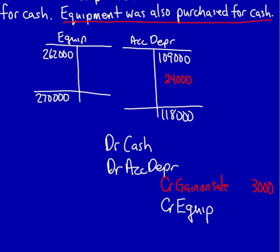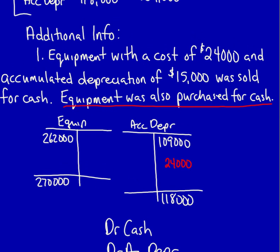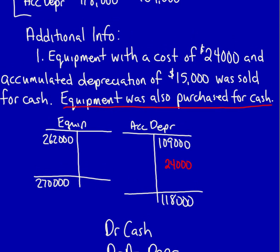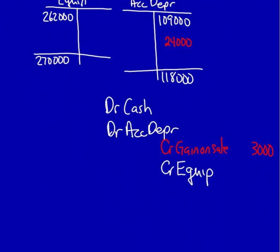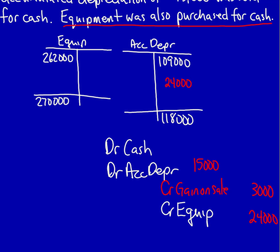Anything else available on the income statement? No. We move on to additional information. The additional information shows equipment with a cost of $24,000 and accumulated depreciation of $15,000, so we now know the numbers for our entry: accumulated depreciation $15,000 and equipment $24,000. We can use this entry to fill in the blanks of the T-account — accumulated depreciation $15,000, credit the equipment account $24,000.